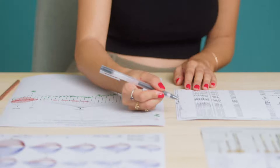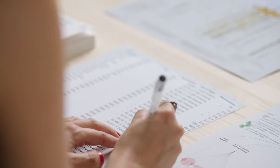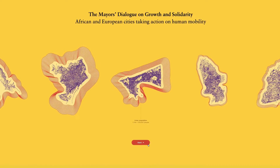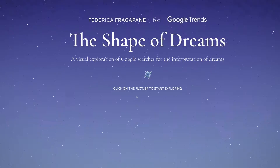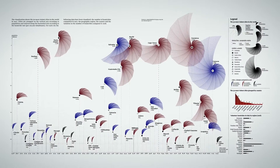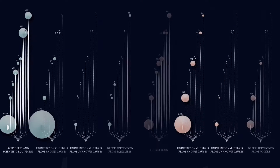Hi, my name is Federica Fragafane, and I'm an information designer. My job is all about using the communicative potential of data visualization to tell stories. I have worked for companies such as Google, the United Nations, La Lettura, and BBC Science Focus.